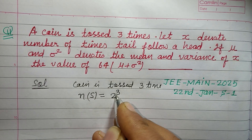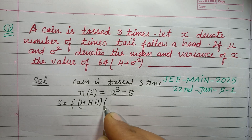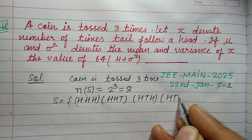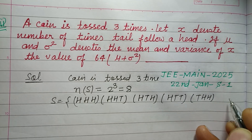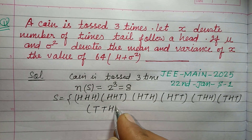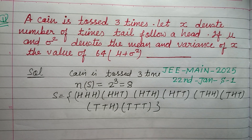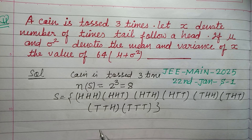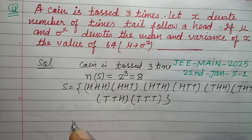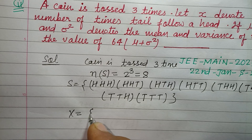A coin is tossed three times, so the total number of elements in the sample space is n = 2³ = 8. The sample space S will be: HHH, HHT, HTH, HTT, THH, THT, TTH, TTT. These are the 8 elements or events in the sample space.